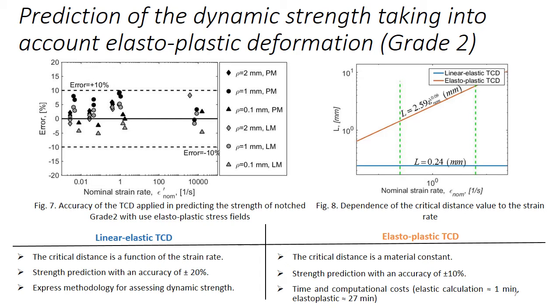The results showed that the use of the modification theory of critical distance based on elastoplastic analysis gives us estimates falling within an error up to 10%, that is more accurate predictions than obtained using the linear elastic TCD solution.